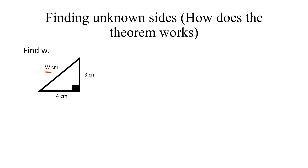A lot of students have trouble knowing where to put the unknown side. Remember, if this angle here is 90 degrees, then the side facing it is the hypotenuse. According to the formula, the hypotenuse squared equals the sum of the other two sides. So here we have w squared equals 3 squared plus 4 squared. It's then just a matter of making w the subject of the formula. In this case, w is the hypotenuse.